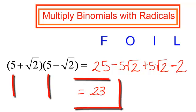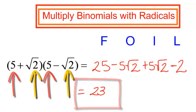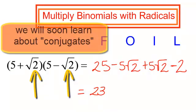You will learn in a future video that when we have these same terms in the binomial but just different signs — a positive and a negative — we lose the radical completely.